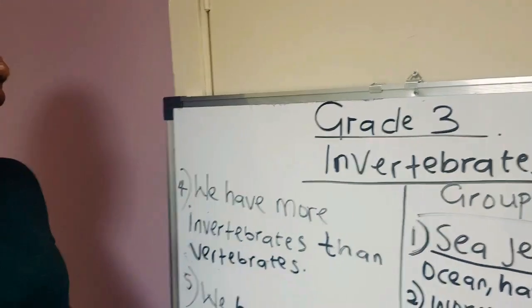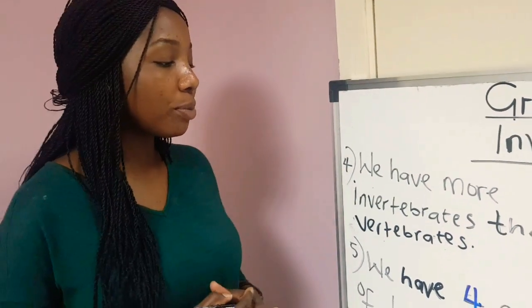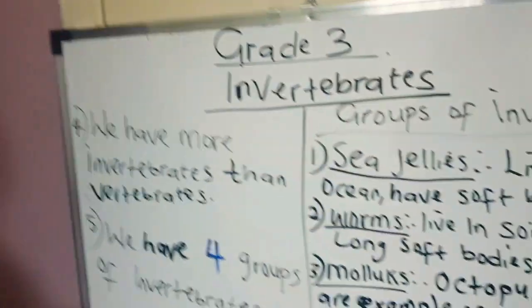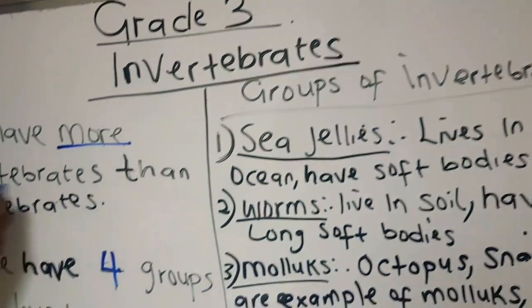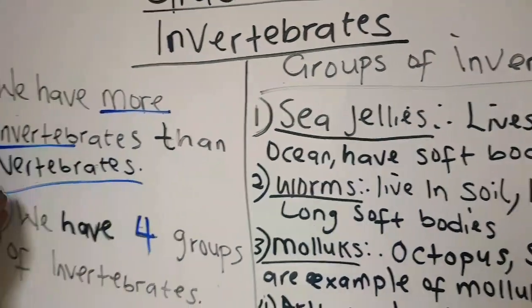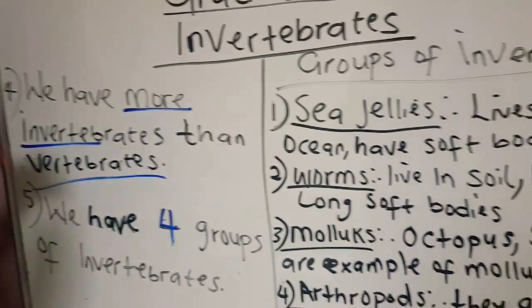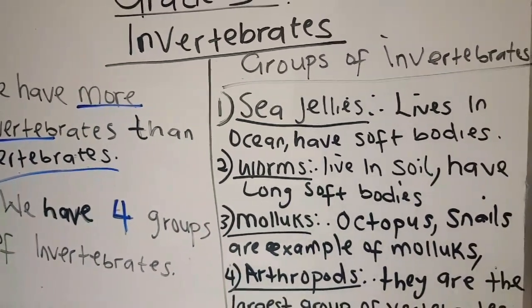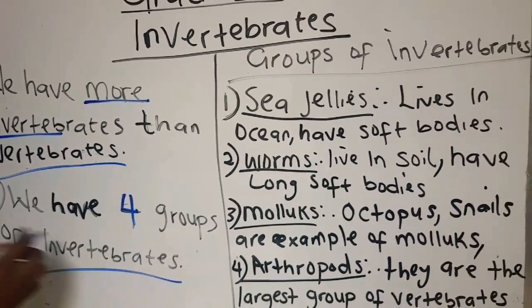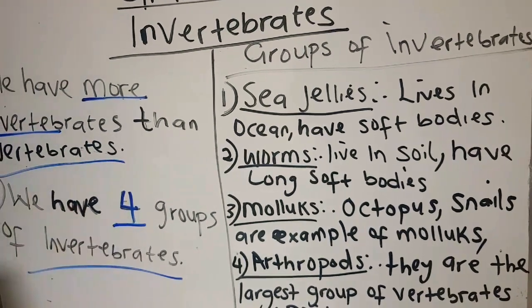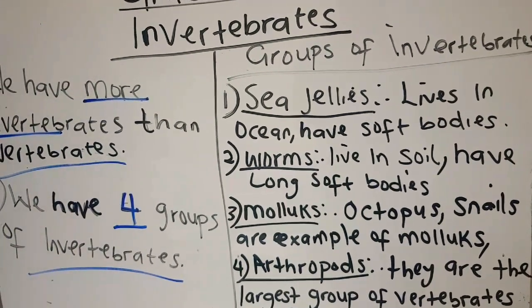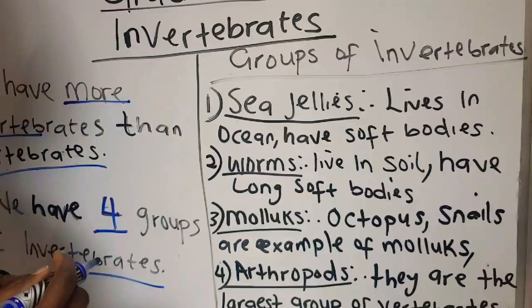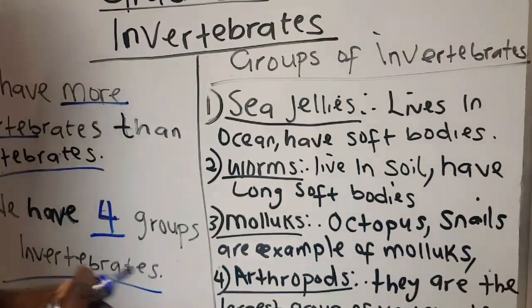We have more invertebrates than vertebrates in the world. And we have four groups of invertebrates. These are the four groups of invertebrates.